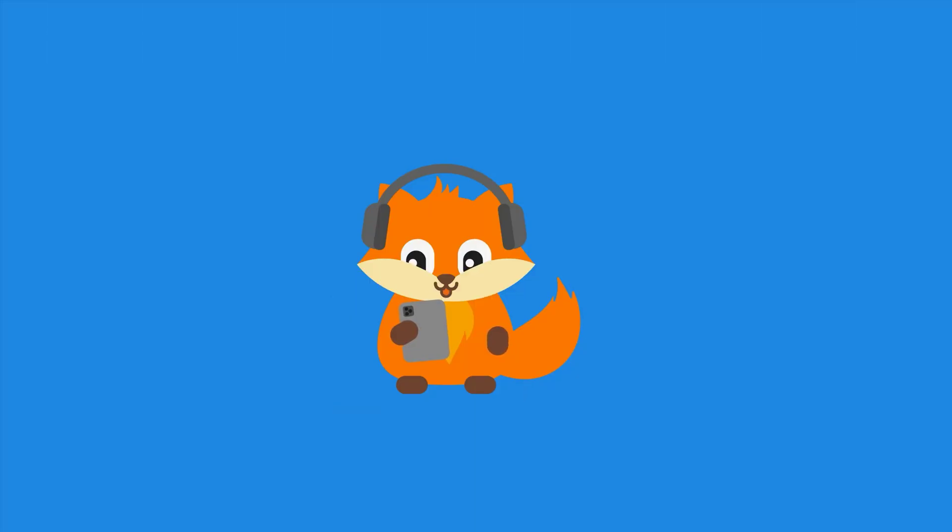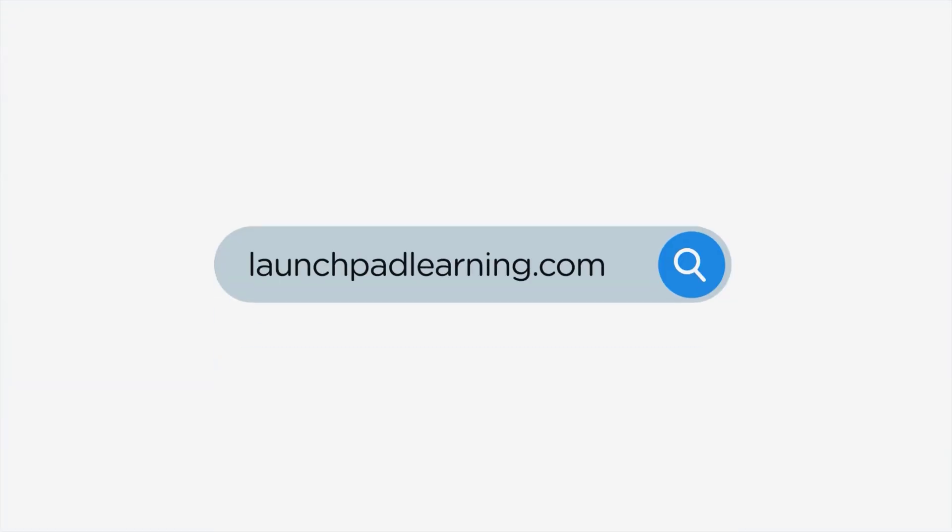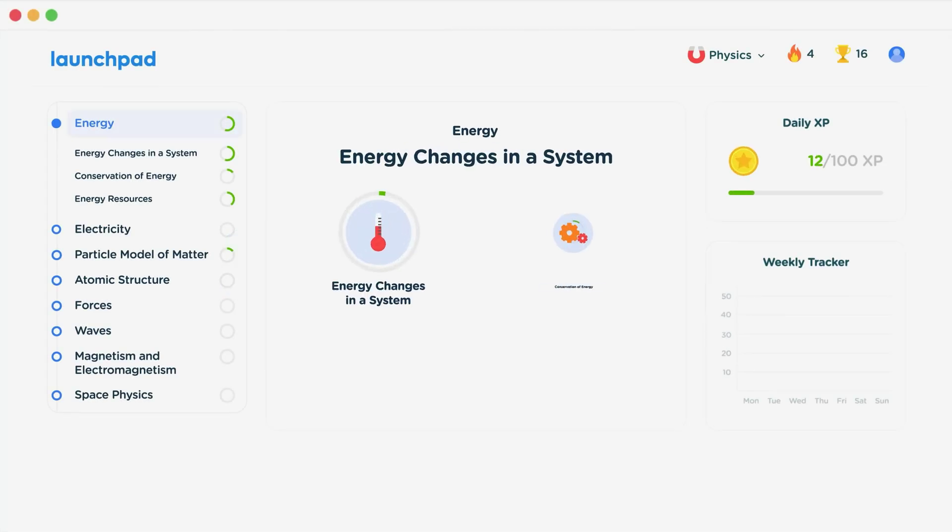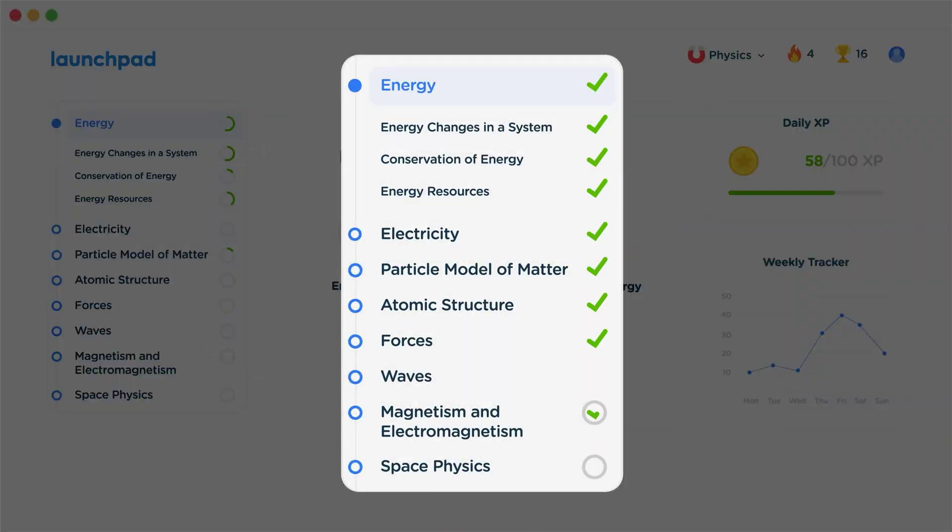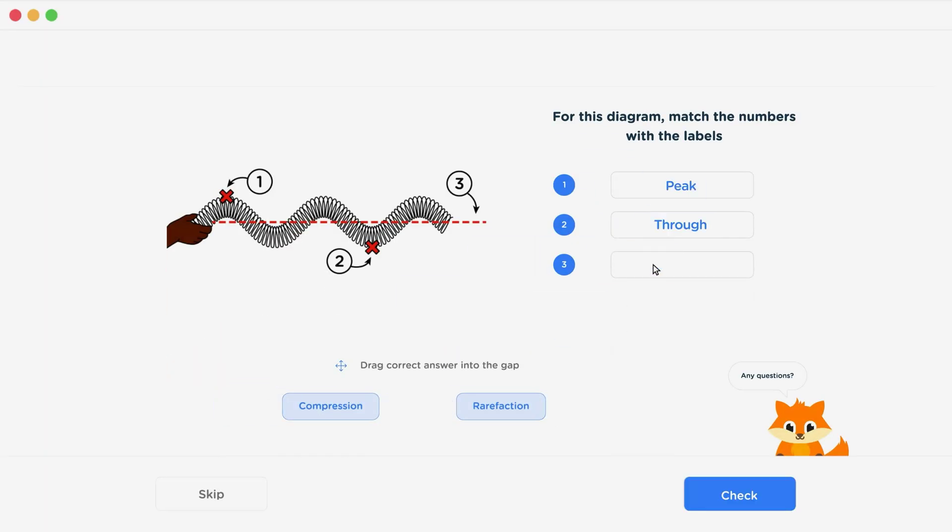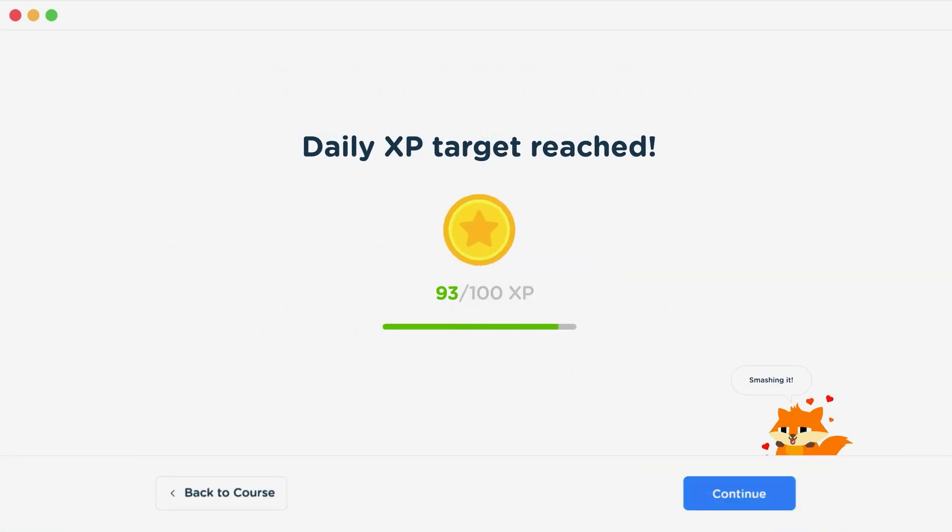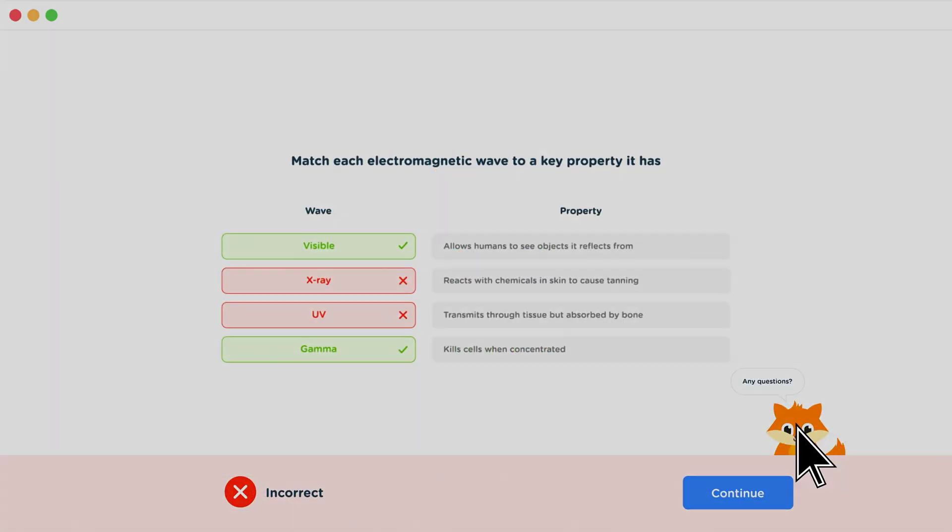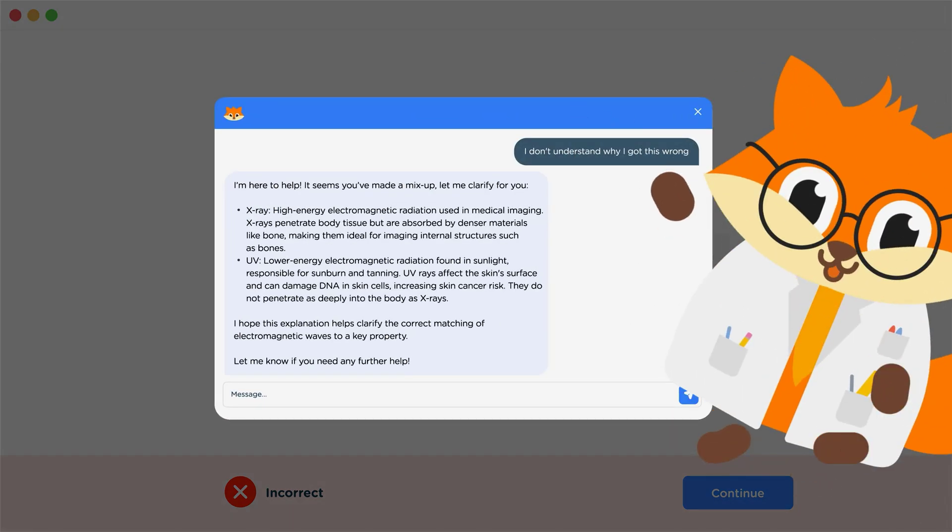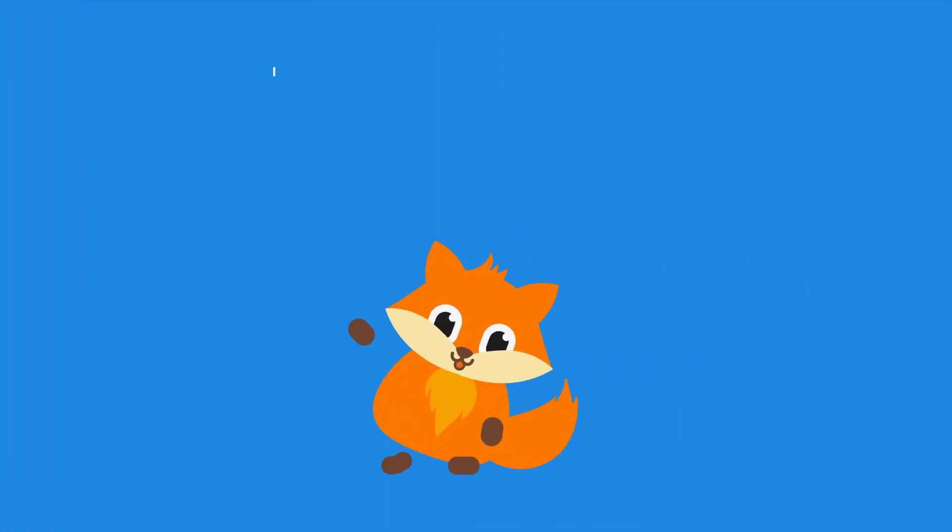If you want to take your GCSE revision to the next level, head over to launchpadlearning.com and check out our smart learning platform that's been designed to get you top results in your exams. We cover your whole specification and make revision fun, with interactive quizzes, easy-to-follow videos, and more. You'll be kept motivated by your own AI tutor, who's here to support you every step of the way. To check it out for yourself, click here.